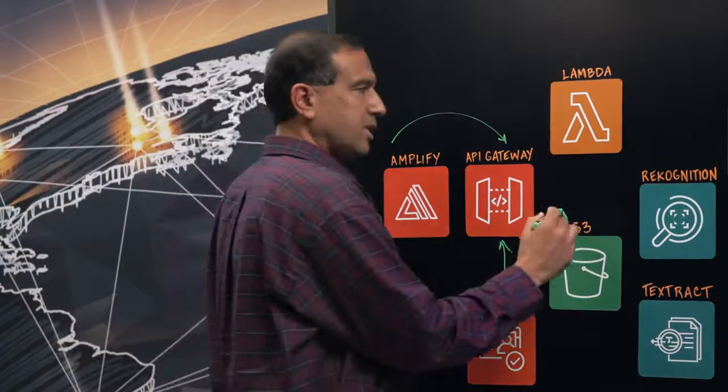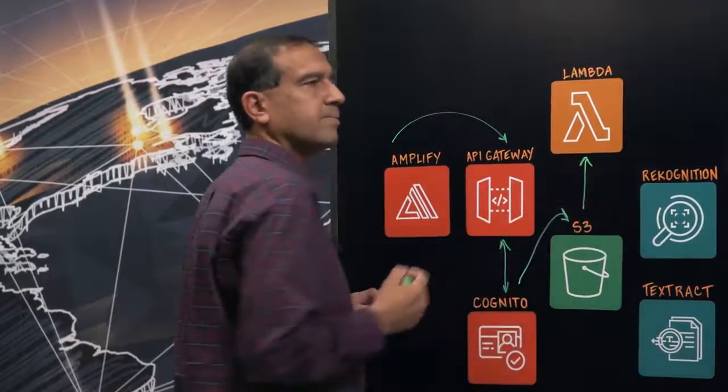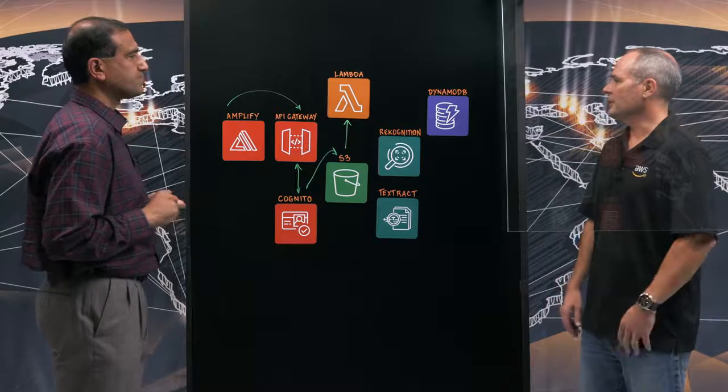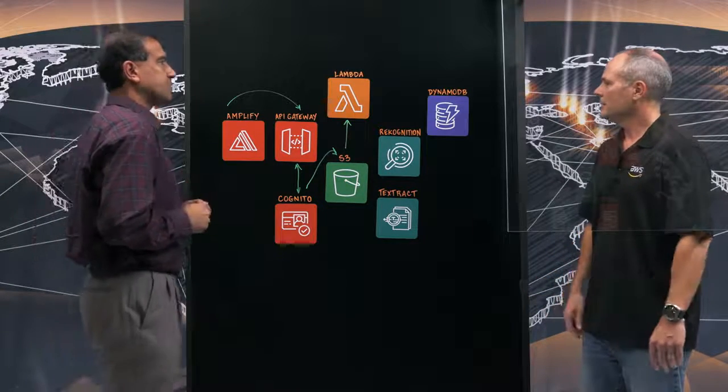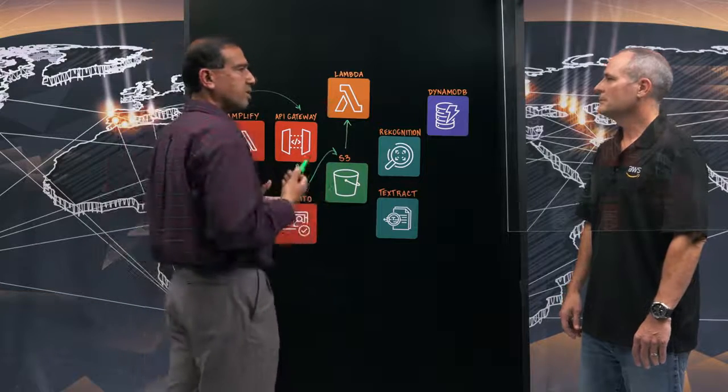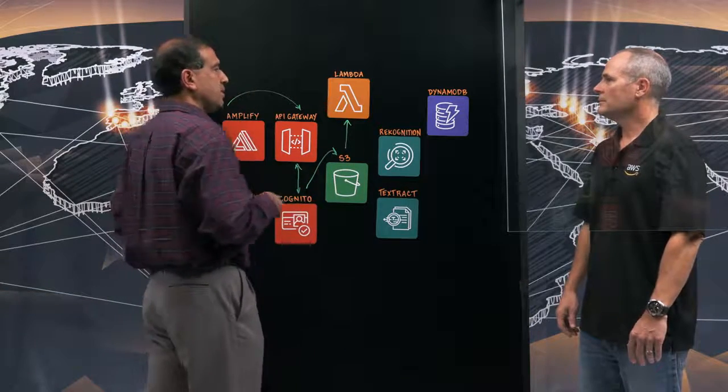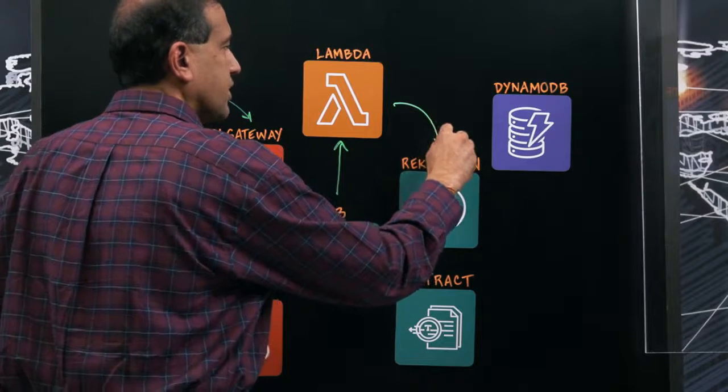As soon as the images reach S3, a Lambda is triggered. Okay. Now what does that Lambda do? It's being triggered by a data event. What's the next step? So the Lambda takes the images or video that is hosted on S3 and invokes Rekognition.